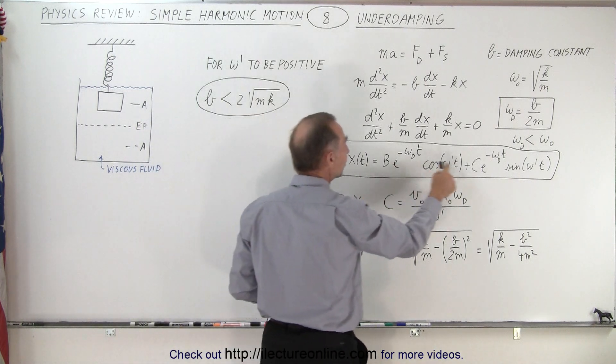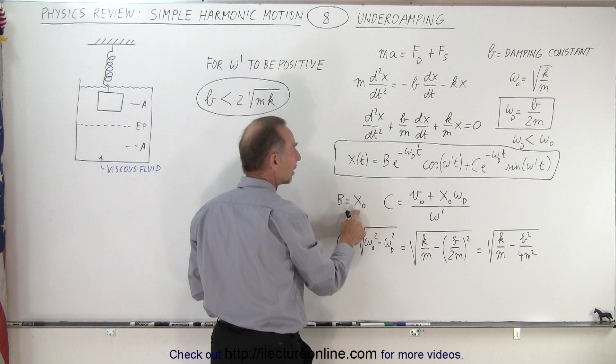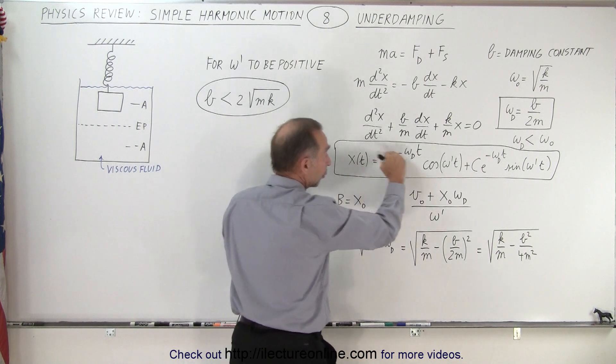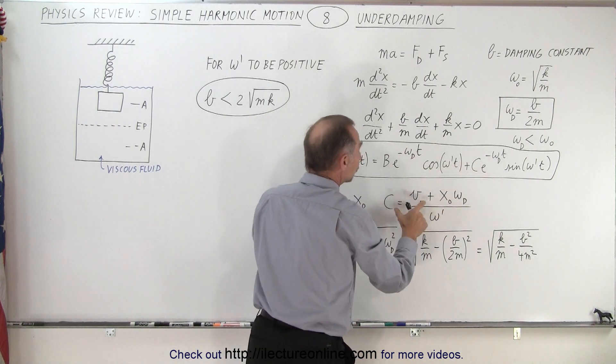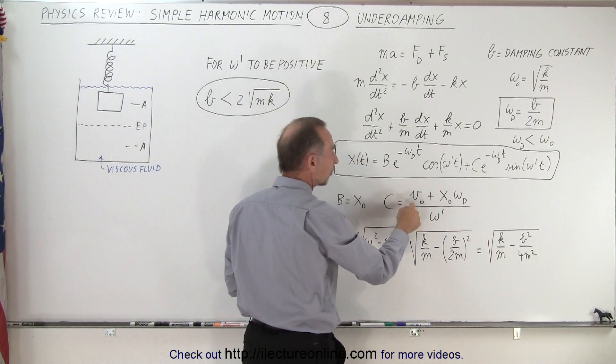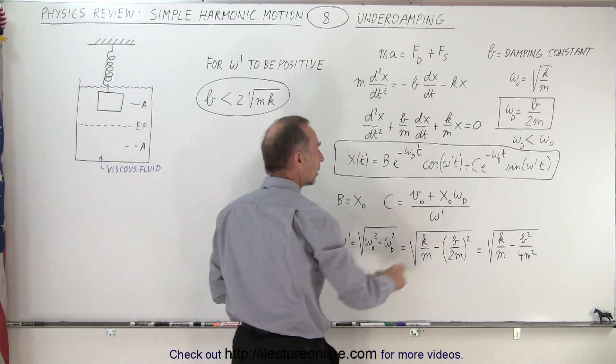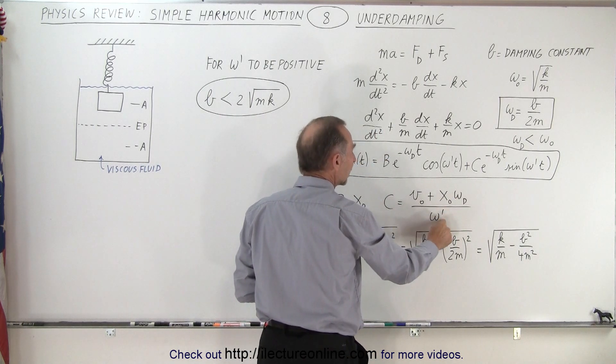The value for the two constants B and C can be found here. Notice that B is simply the initial position, and if that's equal to zero then this whole term goes away. And C is equal to this fraction right here, which is essentially a function of the initial velocity and the initial position, and notice we have omega sub D and omega prime.